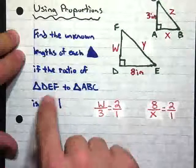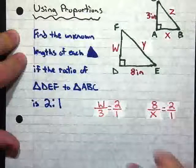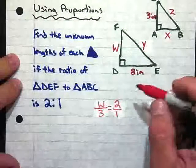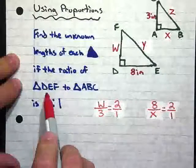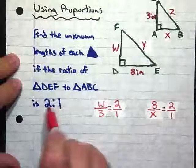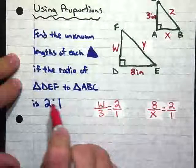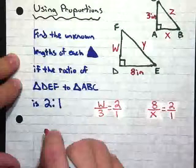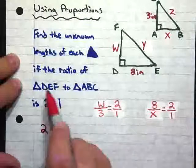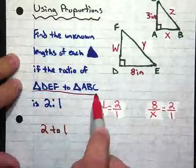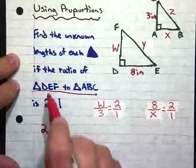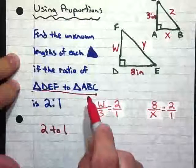And what we want to do is we want to find the lengths of each triangle if the ratio of triangle DEF to ABC is 2 to 1 ratio. So what we're going to do is, the first thing is, notice that right here it says triangle DEF to triangle ABC. And our ratio is 2 to 1. So remember that this 2 colon 1 can be rewritten as 2 to 1, which corresponds with this statement right here. So this 2 is going to go with triangle DEF and 1 goes with triangle ABC.